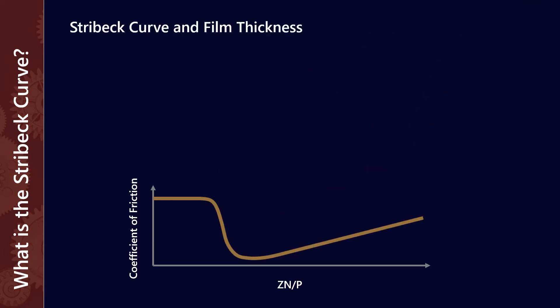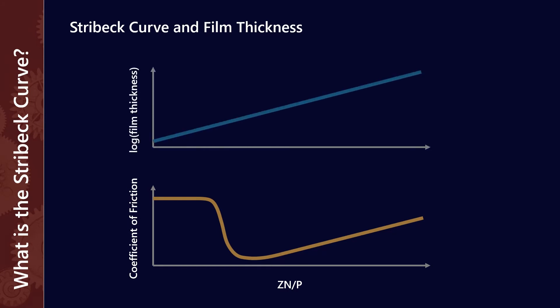If we compare it with a graph of film thickness, the log of film thickness has a linear relationship where it continues to go up with the ZN on P term. Lining up the three segments — boundary, mixed, and hydrodynamic lubrication — the relationship between the coefficient of friction and ZN on P is not linear, but the log of film thickness is.